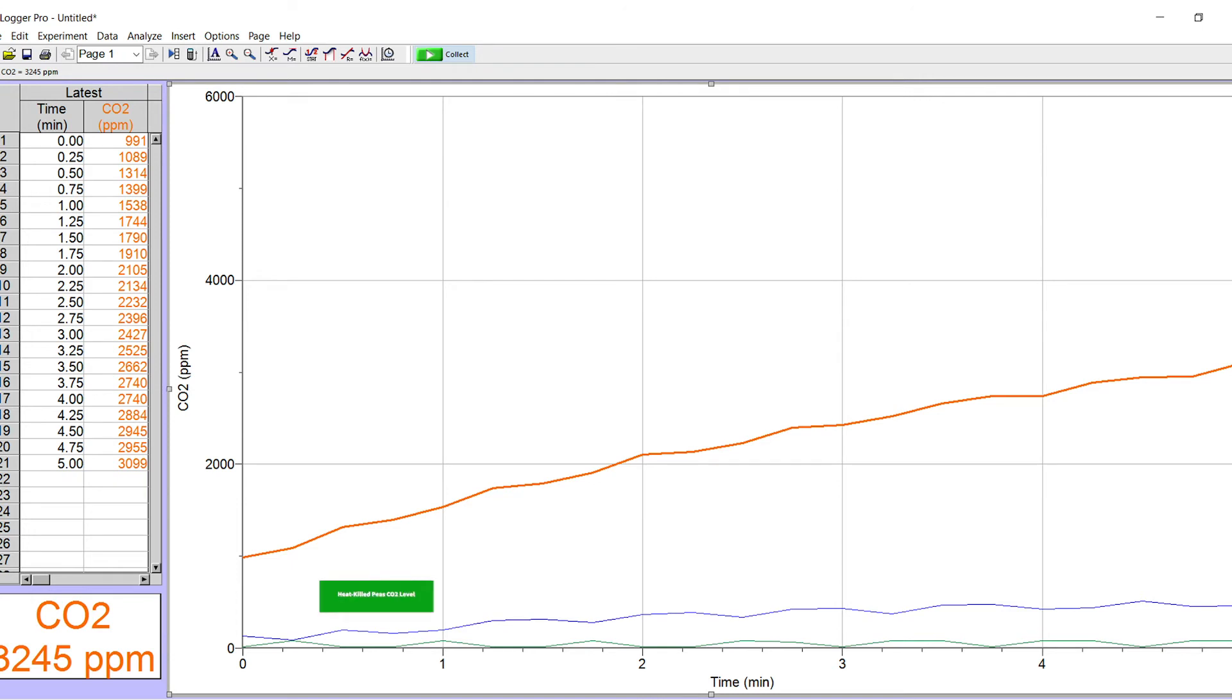We see from the final graph that our heat killed peas did not produce any CO2, only measured what was atmospheric and already within the flask. The cold germinated peas did produce low levels of CO2. Cellular respiration was occurring but at a greatly reduced rate due to the environmental factor. And then our room temperature peas not only were producing much higher levels of CO2 but those levels of CO2 increased over time. We measured for five minutes and saw that we had a steady increase of CO2 levels within the flask due to cellular respiration occurring within the germinated peas.